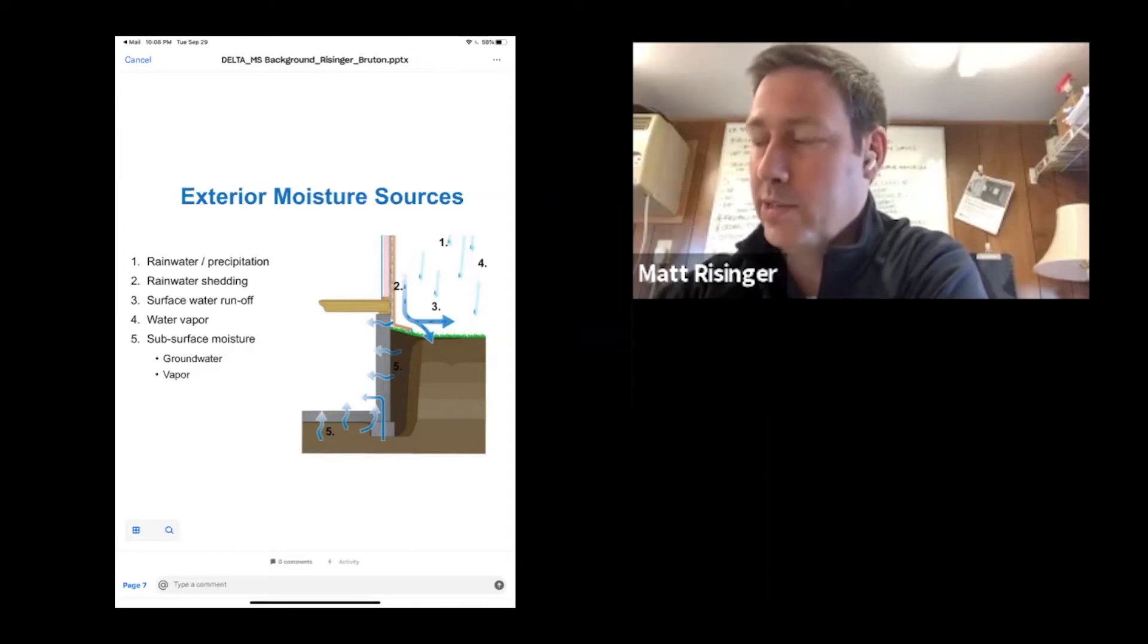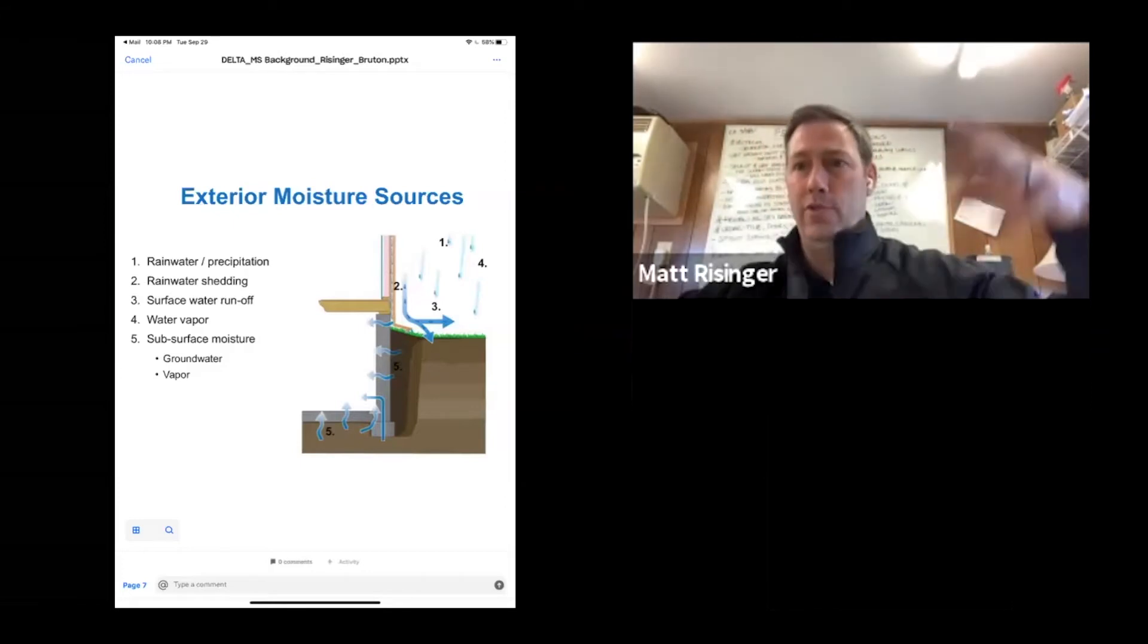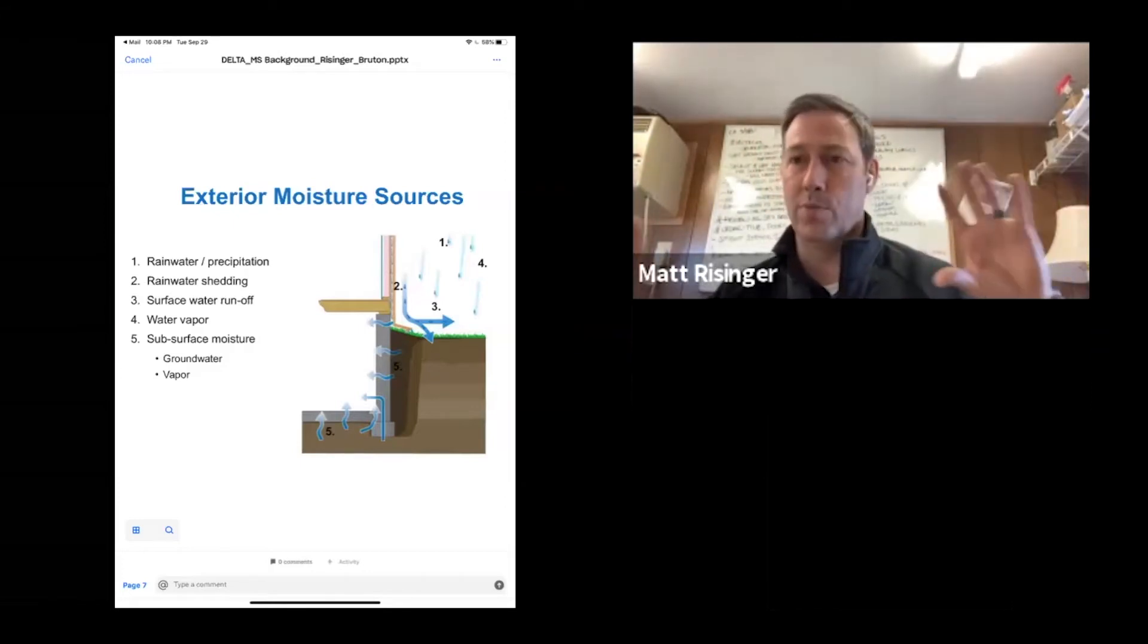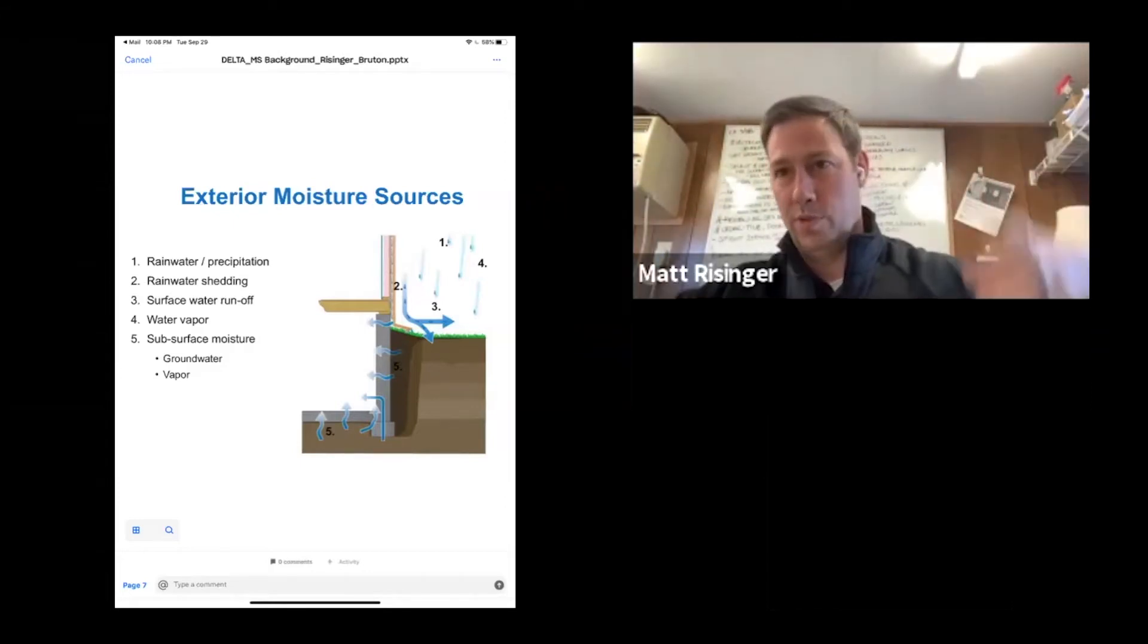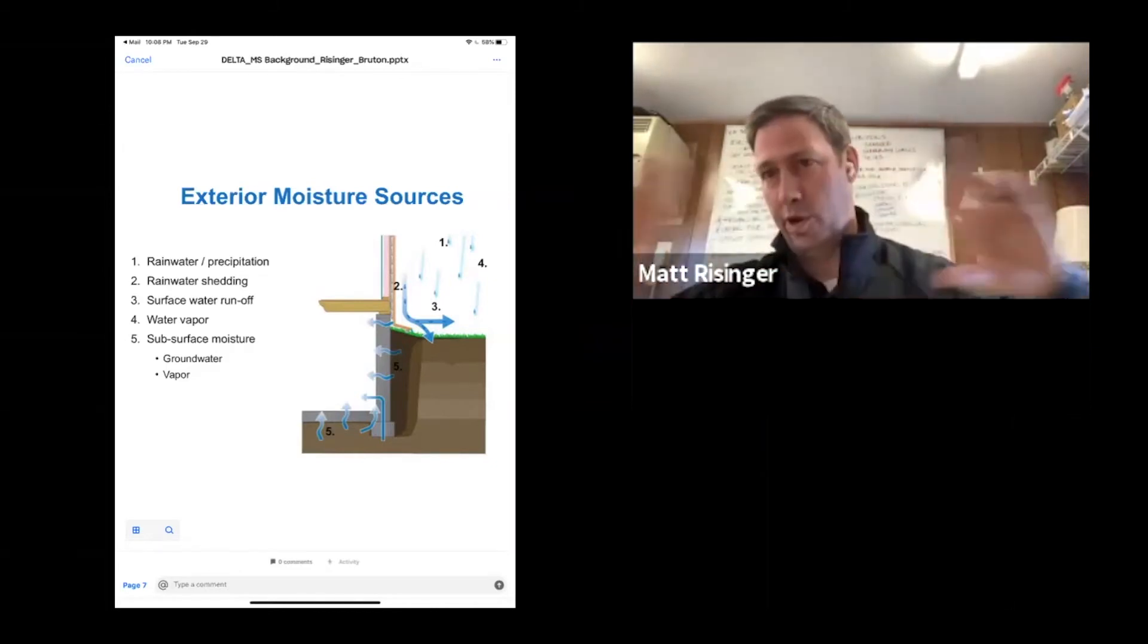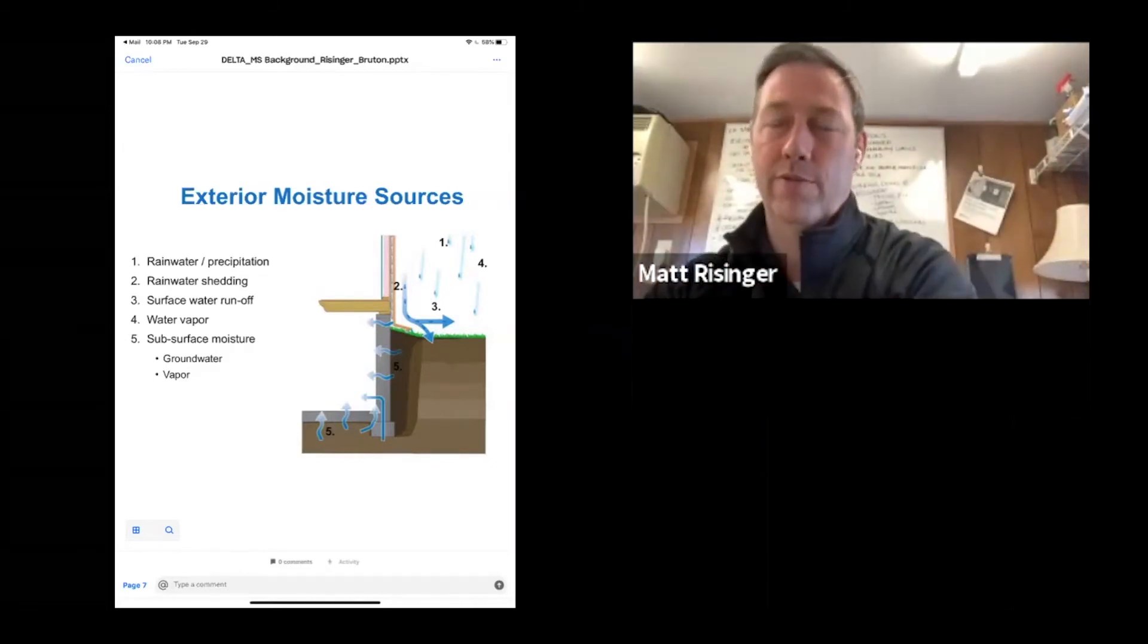We used panelized systems. Our concrete guy had these eight-foot panels with brick stamping on these metal panels. So when he poured the foundation and pulled them, they looked like a brick facade foundation.